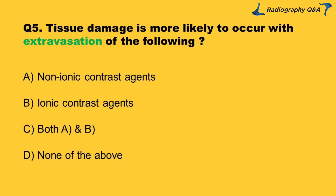Question 5: Tissue damage is more likely to occur with extravasation of which of the following? Option A: non-ionic contrast agents. Option B: ionic contrast agents. Option C: both A and B. Option D: none of the above. Right answer is Option B.